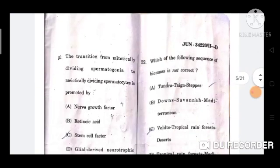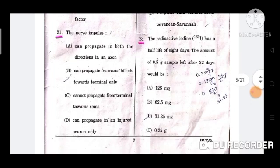Question number 21: The nerve impulse -- the correct answer is option B, can propagate from axon hillock towards terminal only.